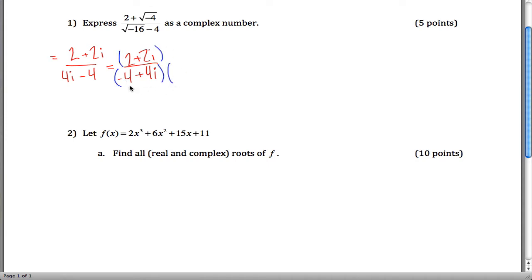So in this case, instead of negative 4 plus 4i, we'll do negative 4 minus 4i. Something like that. And then we can multiply across.